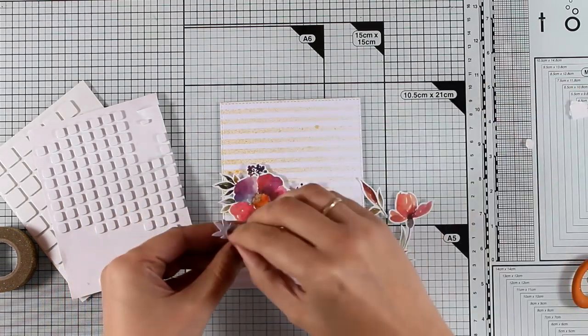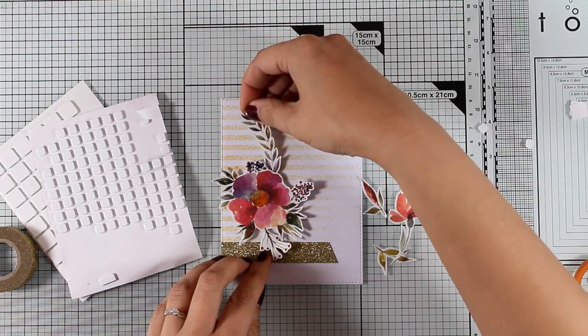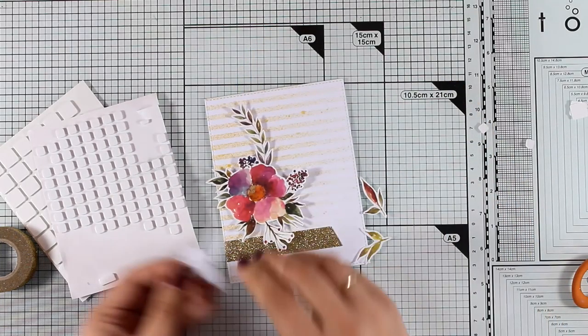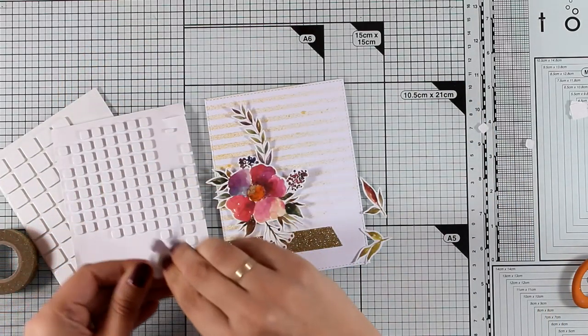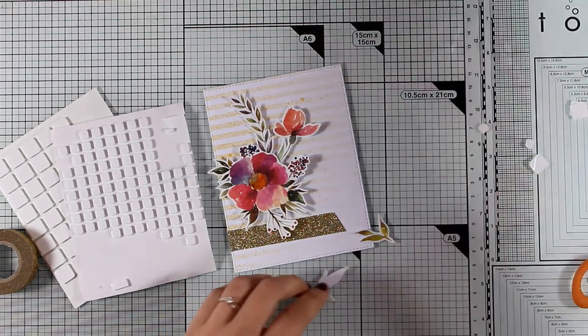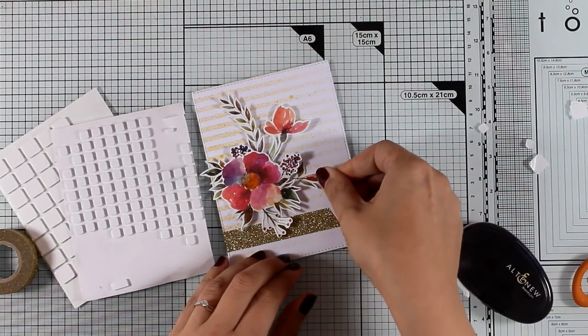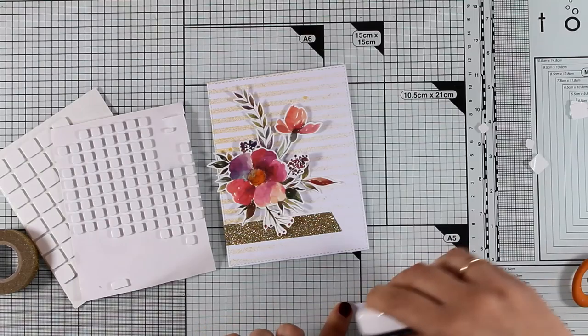Now I really like doing fussy cutting I find it very relaxing but I know some people try to avoid it. Just remember that if you leave quite a white border around your image it's not as difficult to cut it out as it looks since you don't have to cut out all the little details. You just leave the white space there.